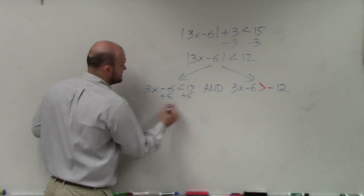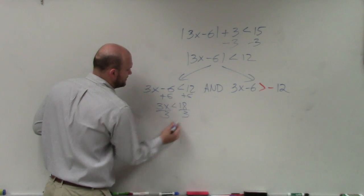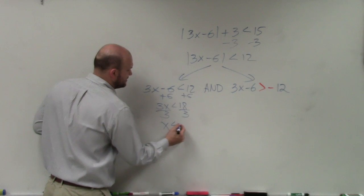So I add 6, add 6. 3x < 18. Divide by 3, divide by 3. x < 6.